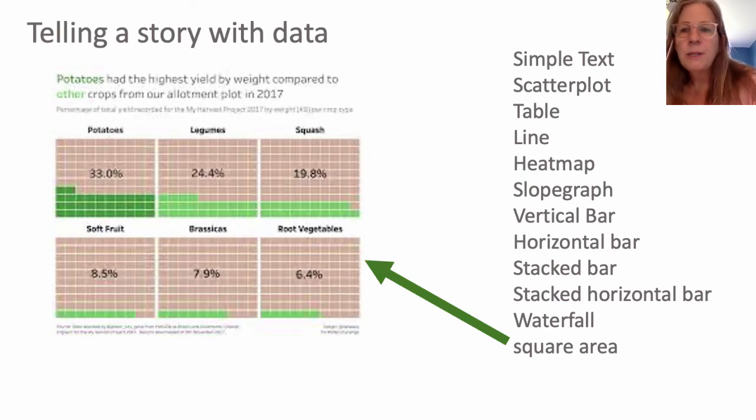Another thing is a square area where you can indicate what is the relative area associated with particular data. This is a visual way of seeing relative amounts of data.